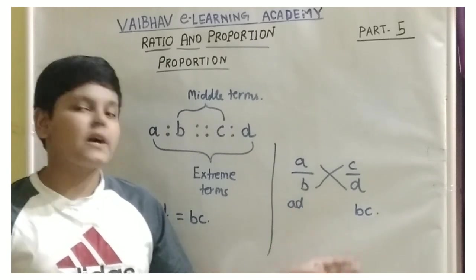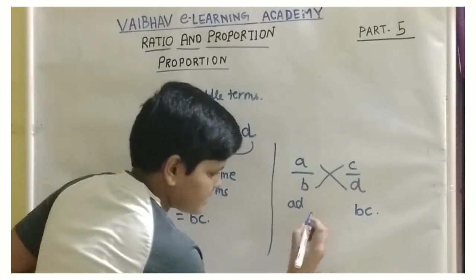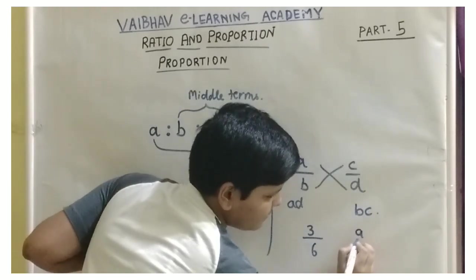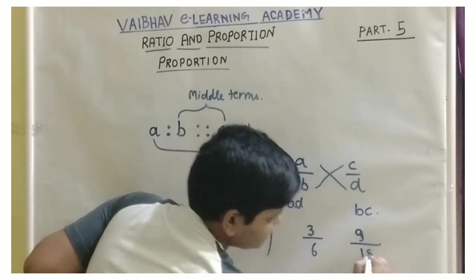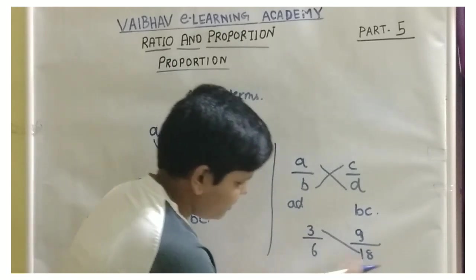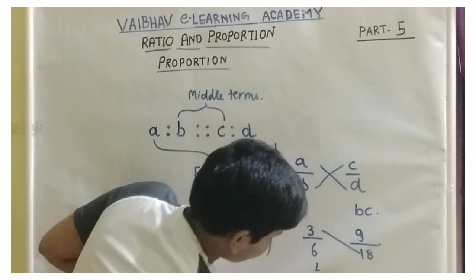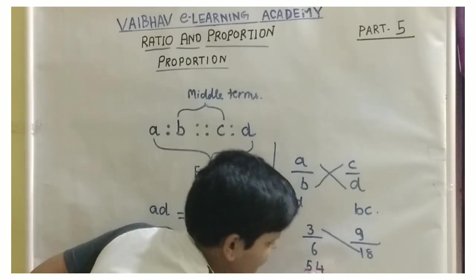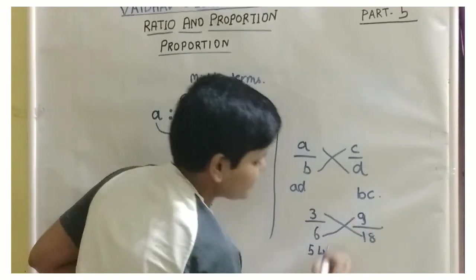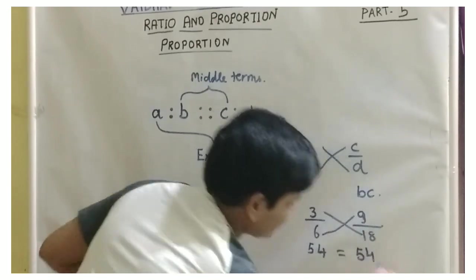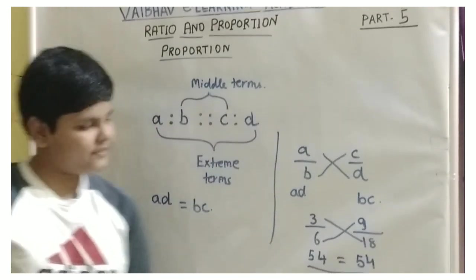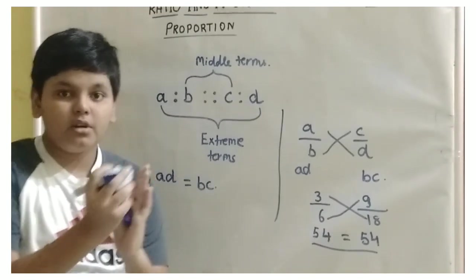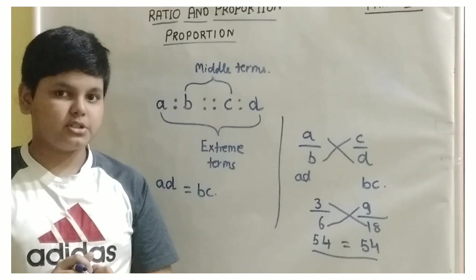Let us take an example. a by b is 3 by 6 and c by d is 9 by 18. If we multiply 3 into 18, we get 54. And if we multiply 6 into 9, we also get 54. Since 54 equals 54, there are many ways to check whether two ratios are proportional or not.